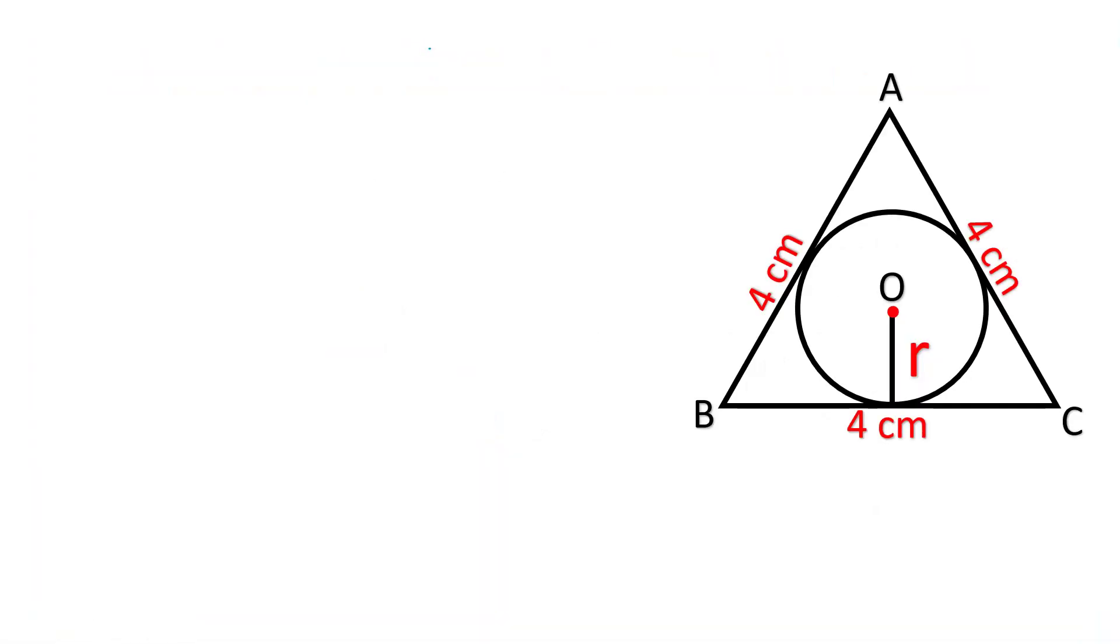The formula to find out the radius of incircle is a upon 2 under root 3. That is, the radius is given by the side of equilateral triangle divided by 2 root 3.